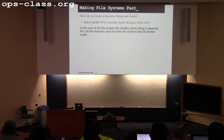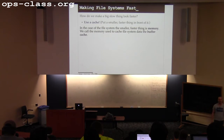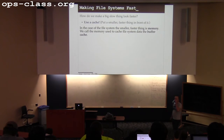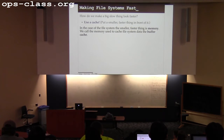In the case of the file system, which is the disk, that small fast thing is memory. The memory we use for this purpose is traditionally called the buffer cache or file system cache. What's interesting about using memory for this purpose? The high-level processor caches just cache the contents of main memory. Memory, on the other hand - what is interesting about using part of it for a cache? There's an interesting trade-off here.